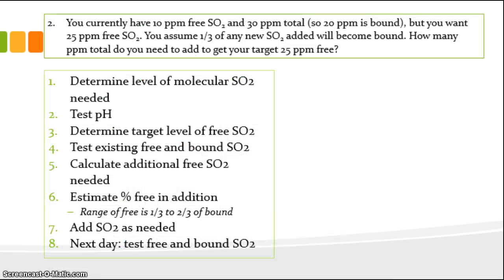Let's go on to problem two. You currently have 10 parts per million free SO2 and 30 parts per million total. So 20 parts per million, of course, is bound. But you want 25 parts per million free. You can assume that one-third of any new SO2 added will become bound. How many parts per million total do you need to add to get to your target of 25 parts per million free?